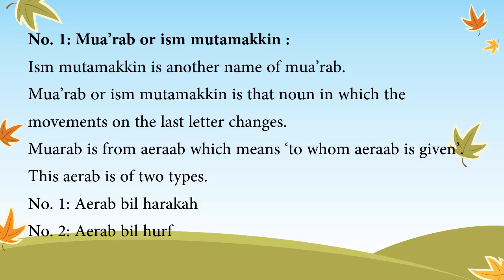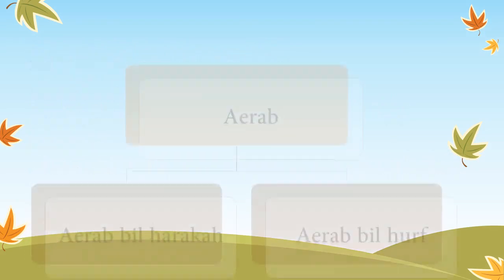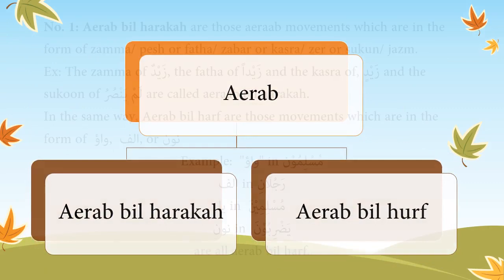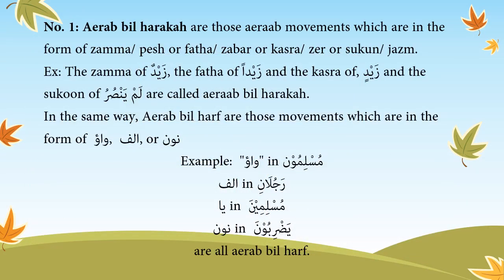Number 1: I'rab bilharaka — those i'rab movements which are in the form of damma (pesh), fatha (zabr), kasra (zayr), or sukun (jazm). Examples: the damma of zaydun, the fatha of zaydan, the kasra of zaydin, and the sukun of lam yansuru. Number 2: I'rab bilharf — those movements in the form of waw, alif, or noon. Examples: waw in muslimuna, alif in rajulani, ya in muslimina, noon in yadribuna.